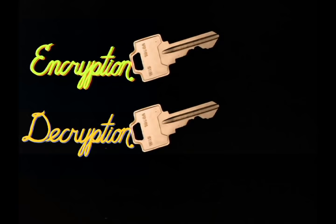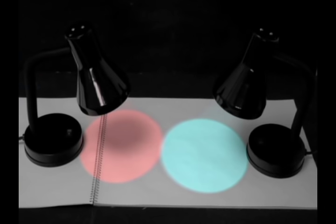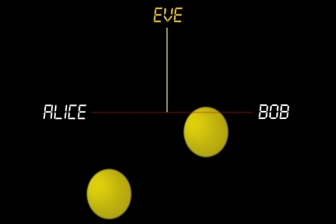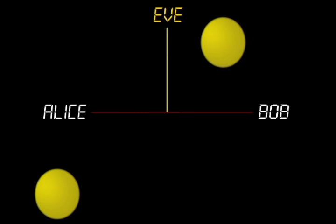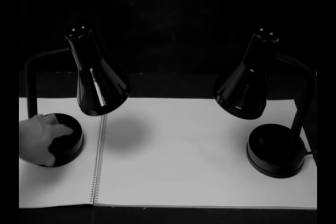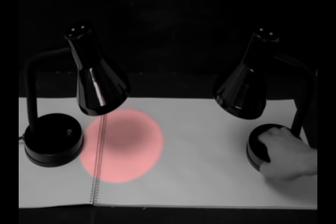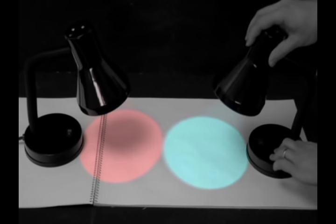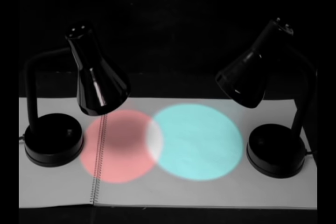To see how inverse keys could work, let's do a simplified example with colors. How could Bob send Alice a specific color without Eve, who is always listening, intercepting it? The inverse of some color is called a complementary color, which when added to it produces white, undoing the effect of the first color.